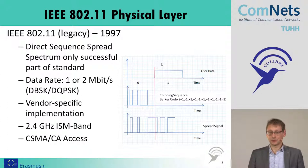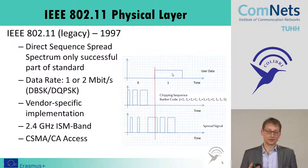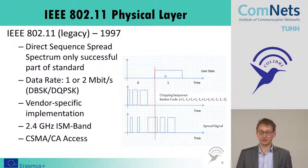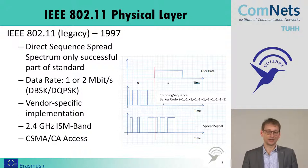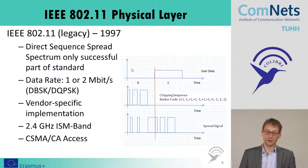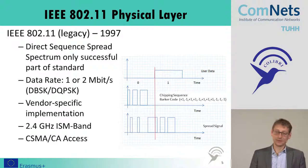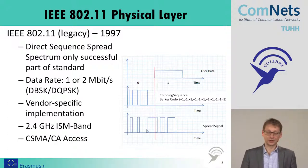For direct sequence spread spectrum, the idea is that you take the user data — a binary sequence of 0s and 1s — and XOR it with a chipping sequence that has a higher chip rate. An 11-bit Barker code is used as the chipping sequence. The result is that out of one bit, you get 11 chips, meaning you transmit 11 times the data rate as a code rate. This introduces a lot of redundancy, which makes the system more robust.